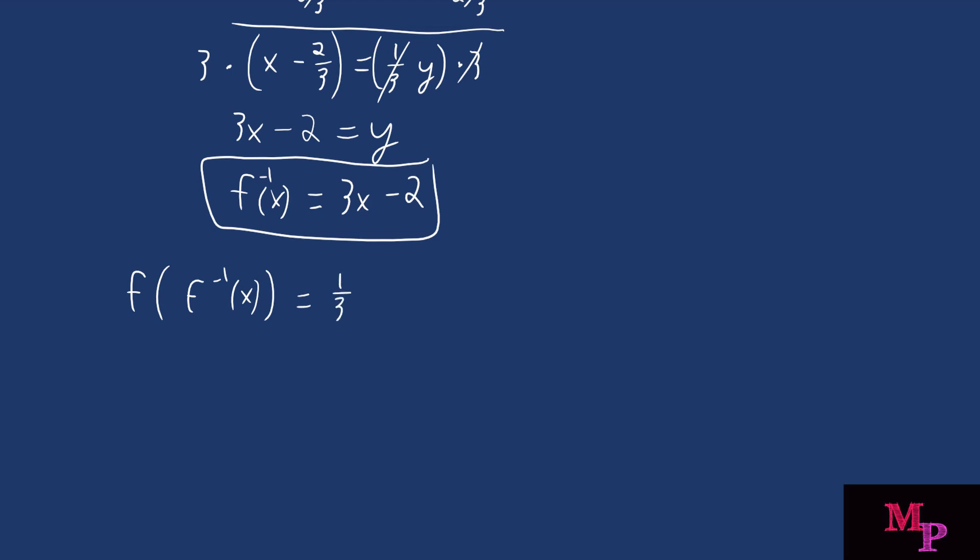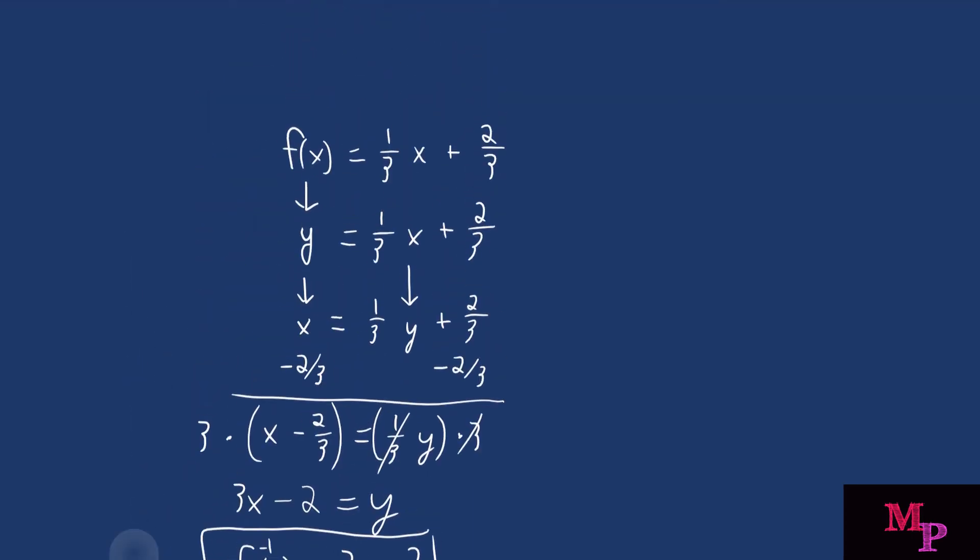So pretty much everywhere you see x in your original function, you're going to want to plug in the value for your inverse function. So over here, for f of x, we have one-third times x plus two-thirds.